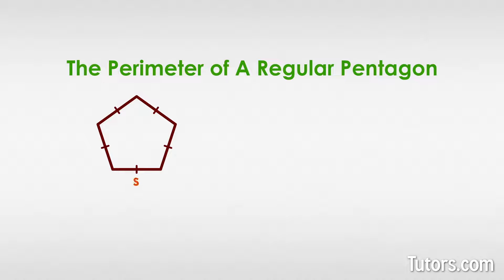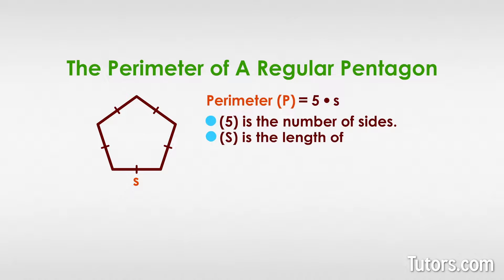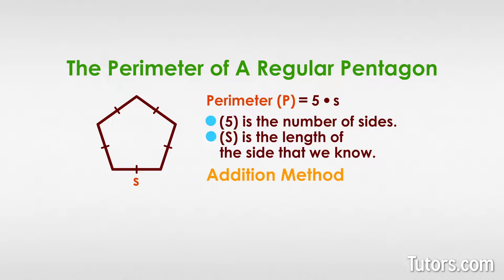To find the perimeter of a regular pentagon with sides of length s, you use the formula p equals five times s. In our formula, five is the number of sides and s is the length of the side that we know. If you prefer to use the addition method, your perimeter for a regular pentagon would look like this.